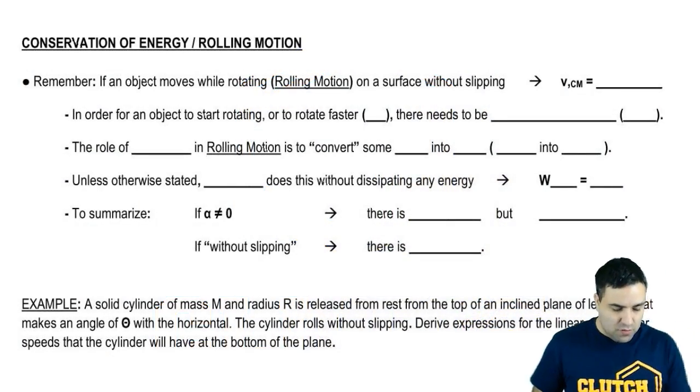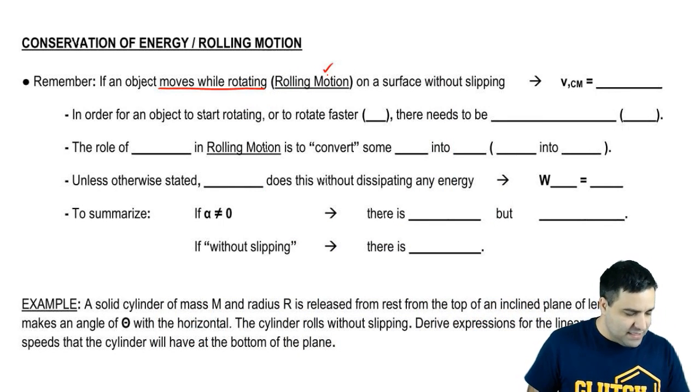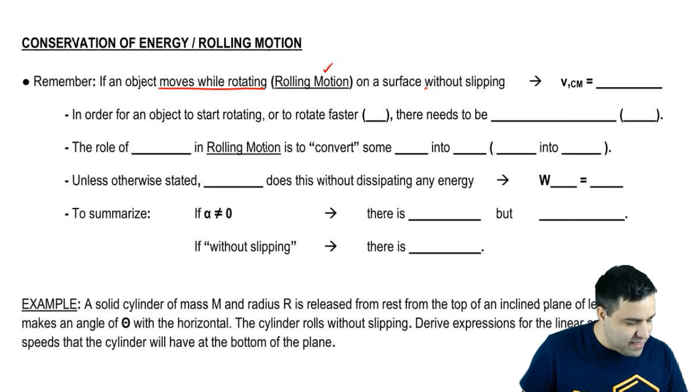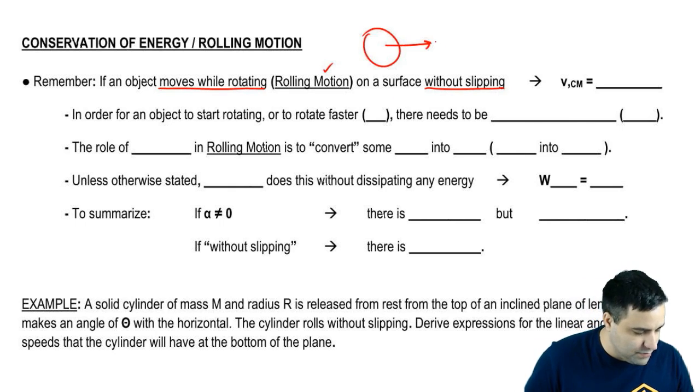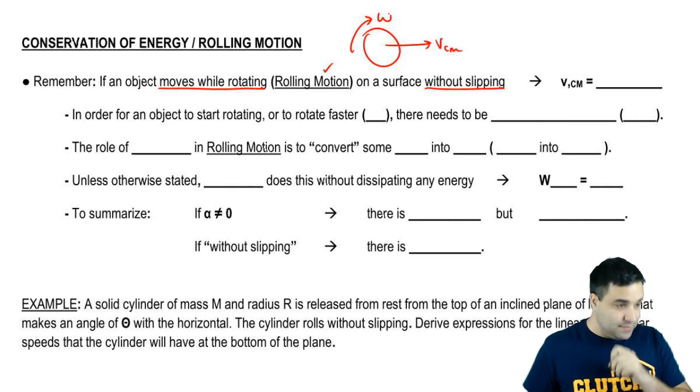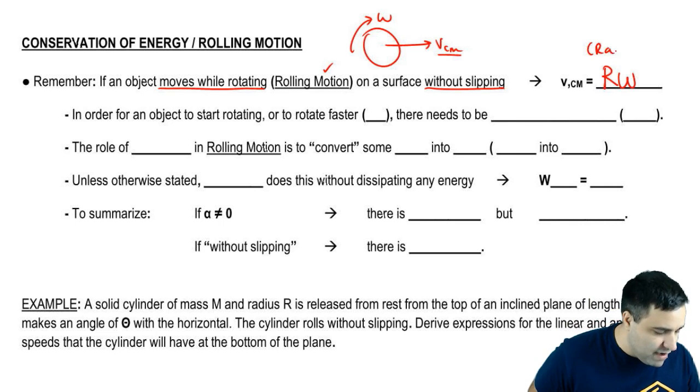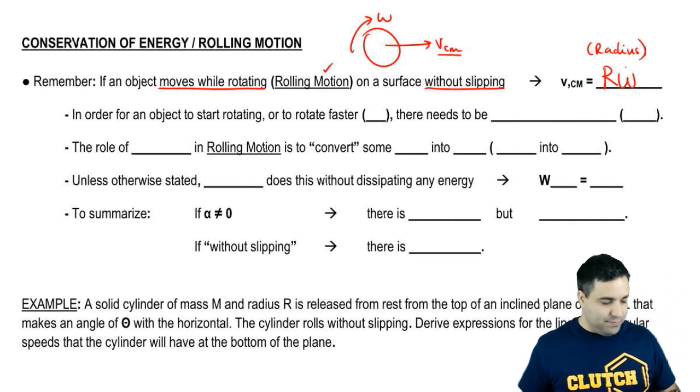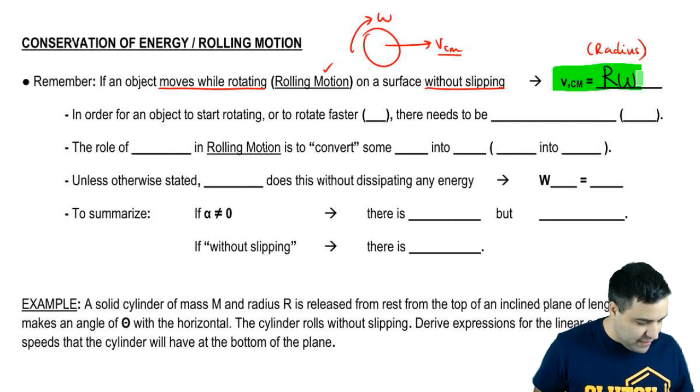All right, so remember, if an object moves while rotating, this is called rolling motion, and it does this on a surface without slipping. We usually show it like this: VCM and there is an omega at the same time. We say that the velocity in the middle here equals r omega, where r is the radius of that wheel-like object. So this is an extra equation that we get to use.